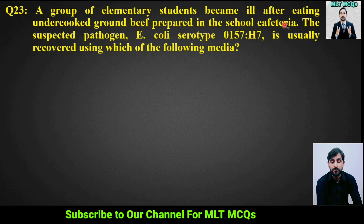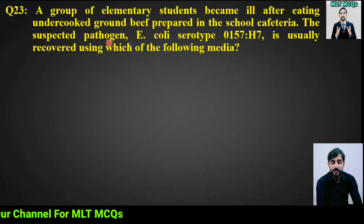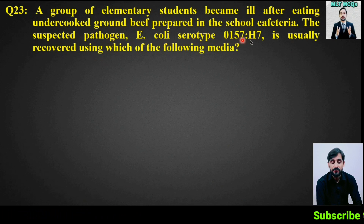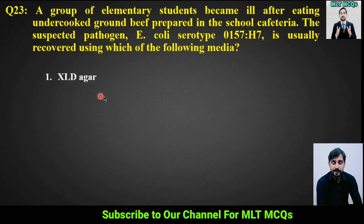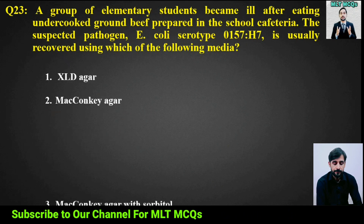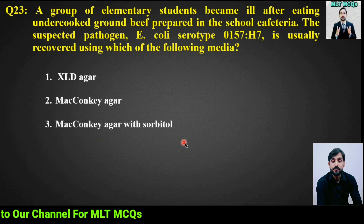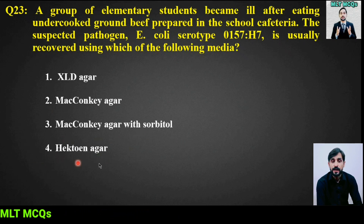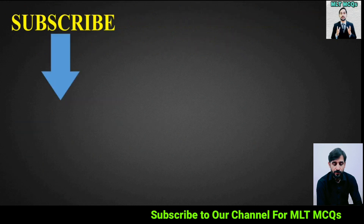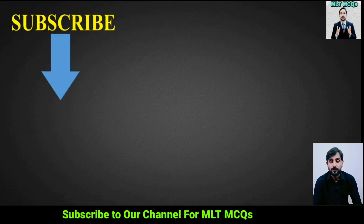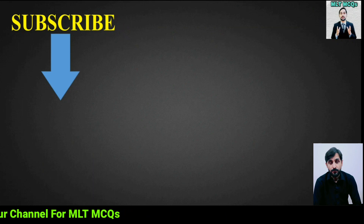MCQ number 23 (last MCQ): A group of elementary students became ill after eating undercooked ground beef prepared in a school cafeteria. The suspected pathogen is Escherichia coli serotype O157:H7, which is usually recovered using which of the following media? Options: XLD agar, MacConkey agar, MacConkey agar with sorbitol, or Hektoen agar. The right answer is option 3: MacConkey agar with sorbitol.